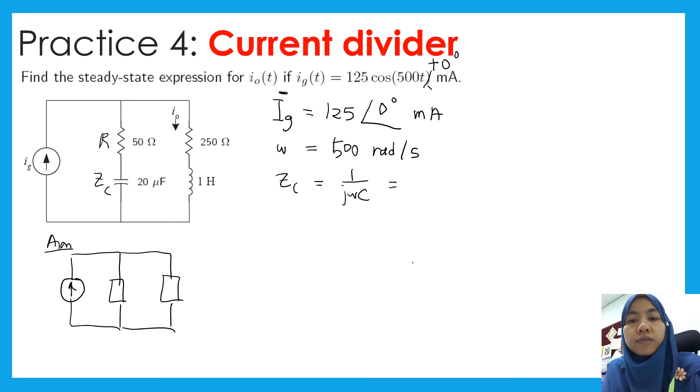Or you can use negative j over ωC. This is easier than the other one. So this is equal to negative j over 500 into 20 micro and equal to negative j100 ohms. Don't forget the unit.